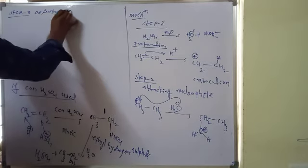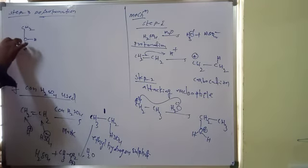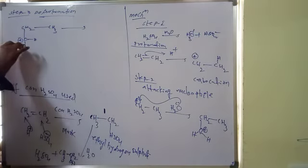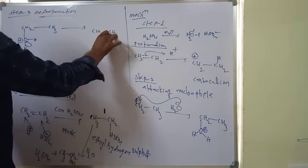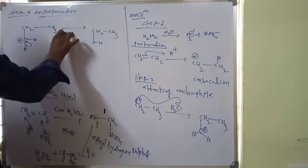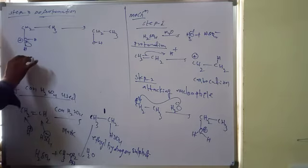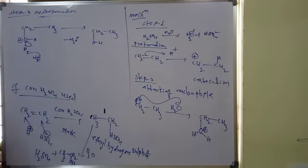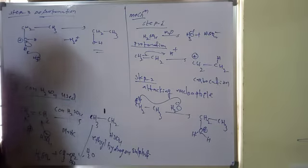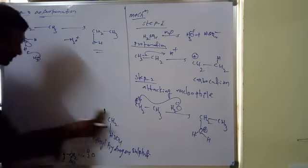Step three: deprotonation — removal of a proton. The positively charged oxygen on CH₃CH₂OH₂⁺ loses H⁺. The electrons are gained by oxygen, giving ethanol as the product. This H⁺ is abstracted by water, which reforms H₃O⁺, so H⁺ is regenerated. Finally, alcohol is formed.